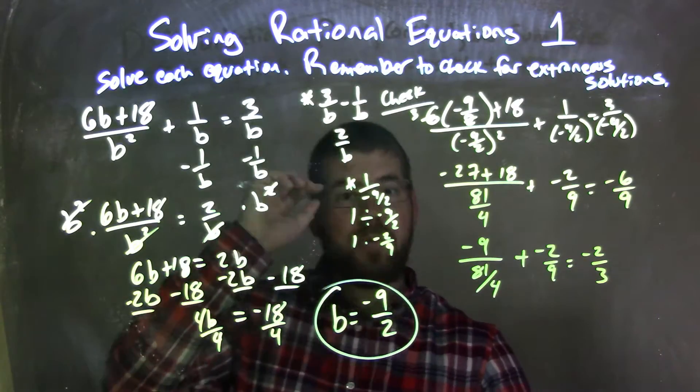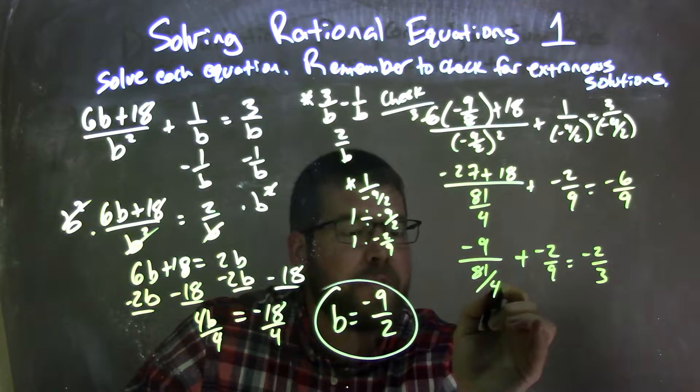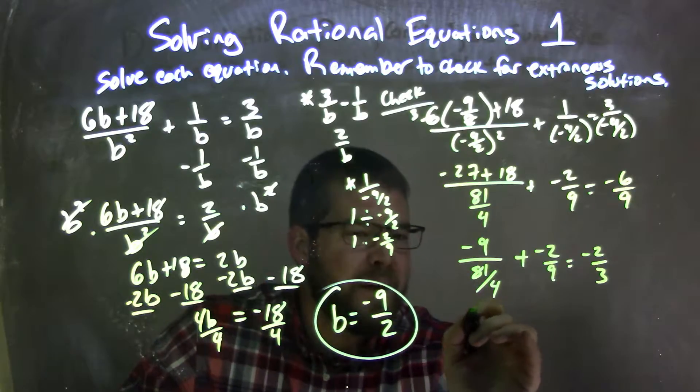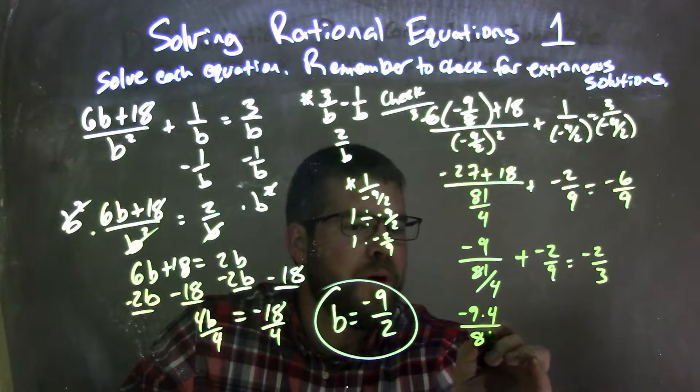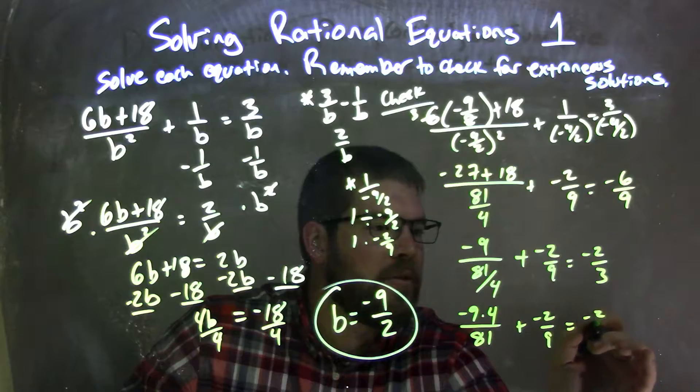Okay, so applying the same thing we did here with the division, we know that it's the same thing as negative 9 times 4, negative 9 times 4. So watch this, I'm going to actually do it like this. Negative 9 times 4 over 81 plus negative 2 over 9 equals negative 2 thirds.